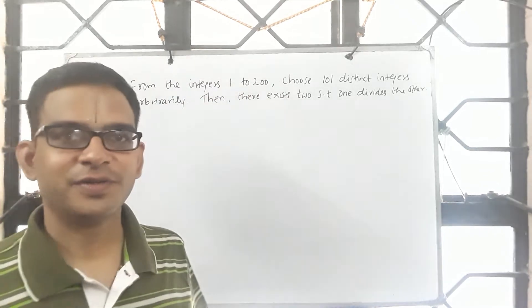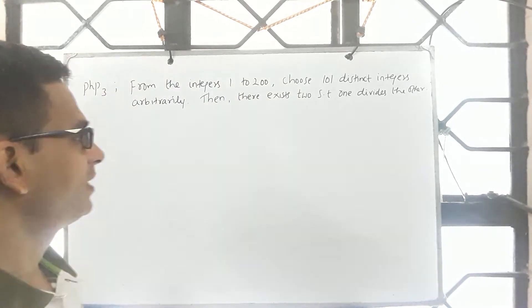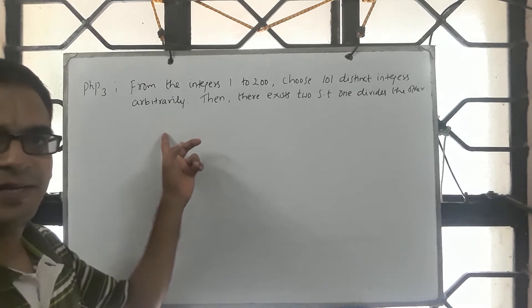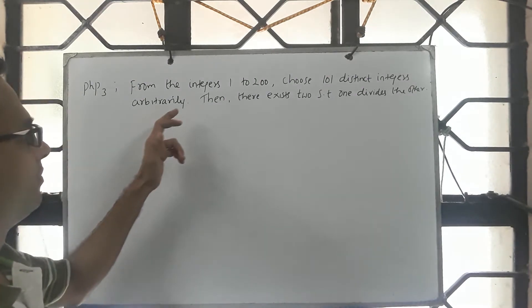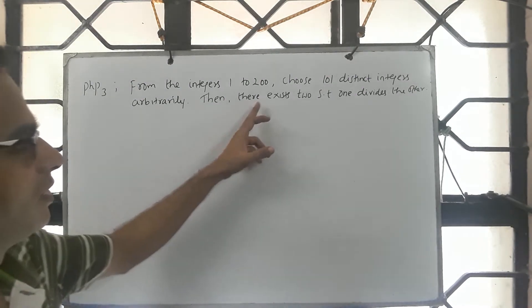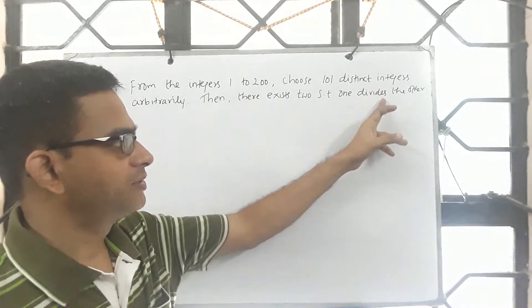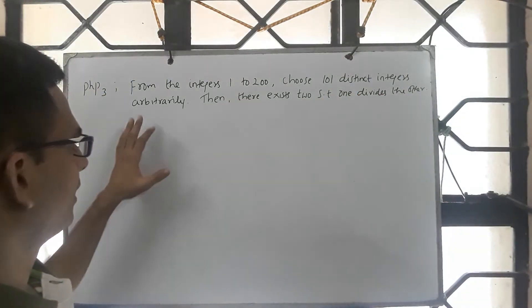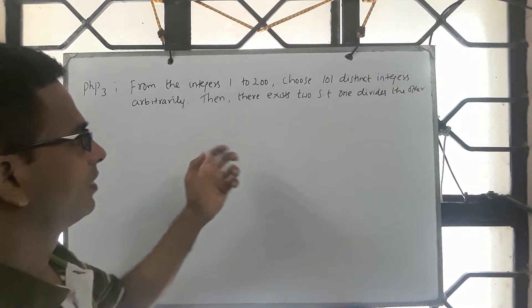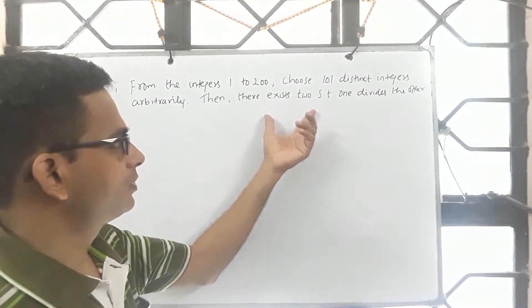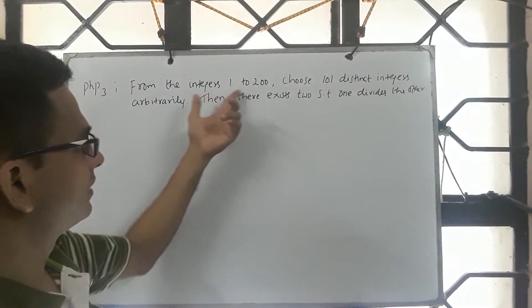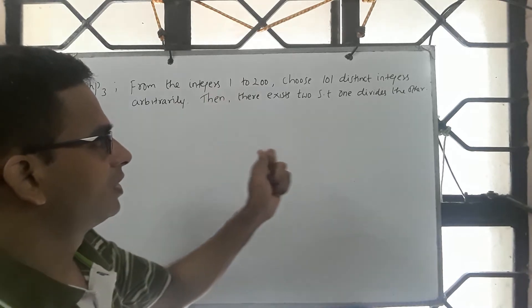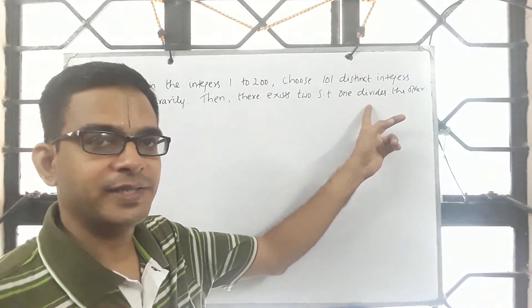We shall continue our discussion on pigeonhole principle. Here is our next case study. From the integers 1 to 100, choose 51 distinct integers arbitrarily. Then the claim says there exist two in the set that we have chosen such that one divides the other.